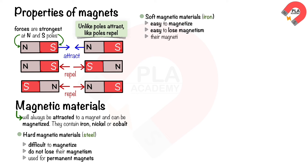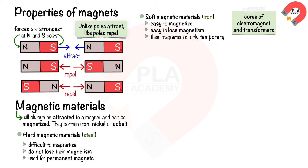Soft magnetic materials such as iron are relatively easy to magnetize and easy to lose magnetism, so their magnetism is only temporary. They are used in the cores of electromagnets and transformers because their magnetic effect can be switched on and off or reversed easily.